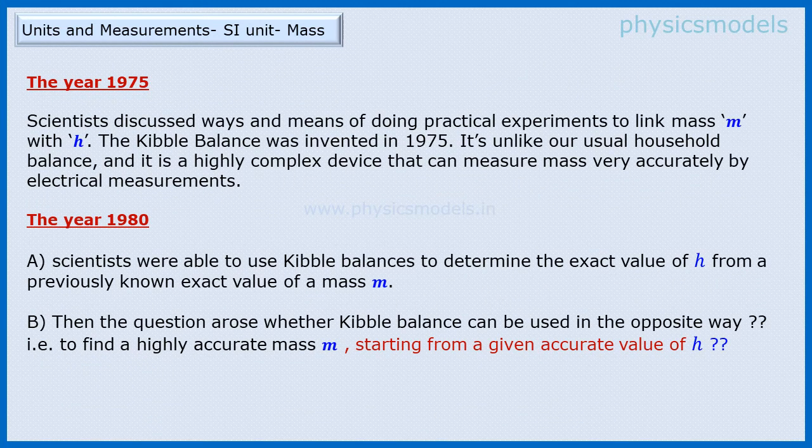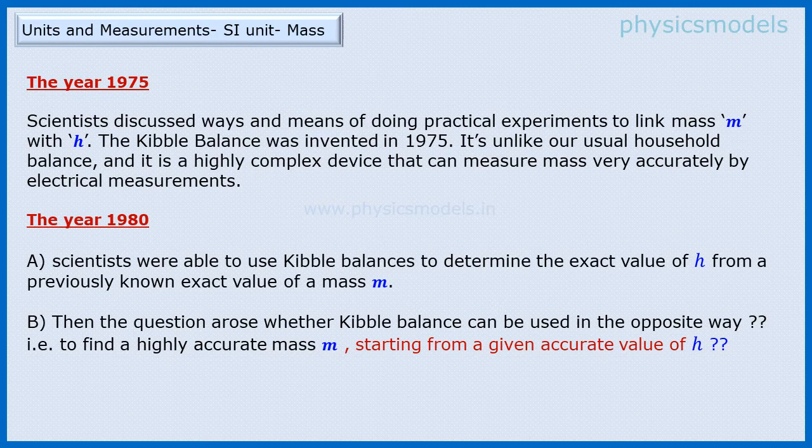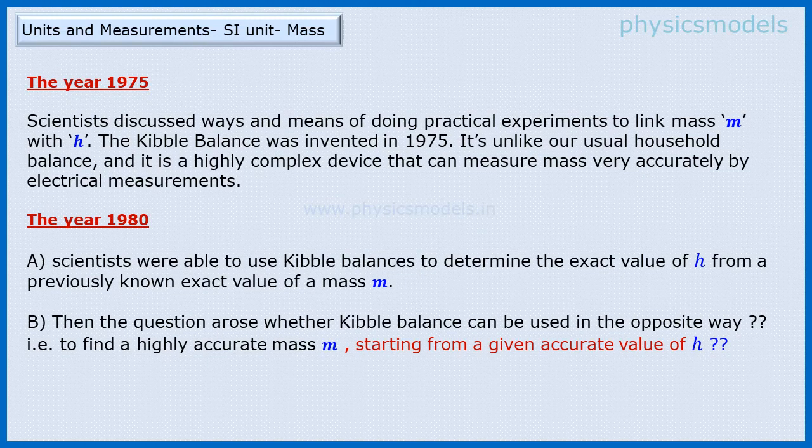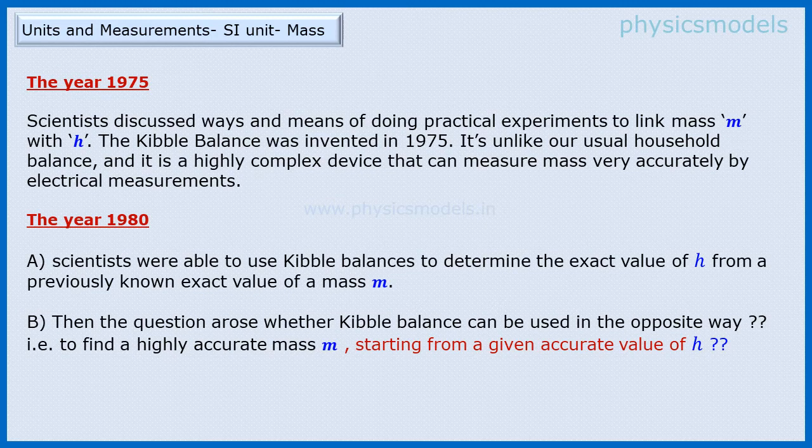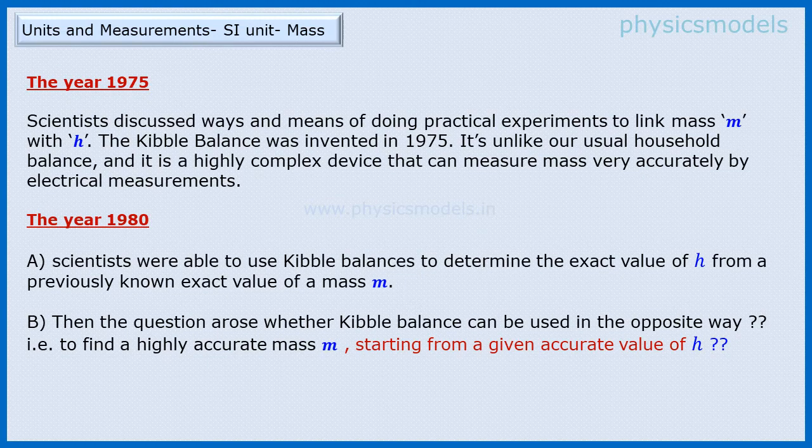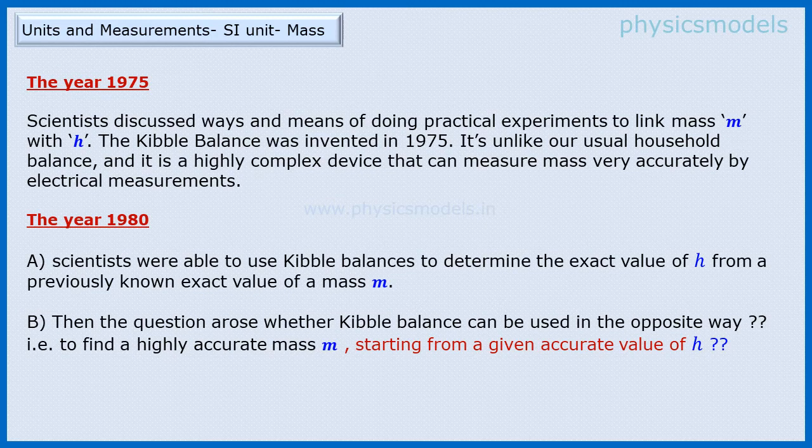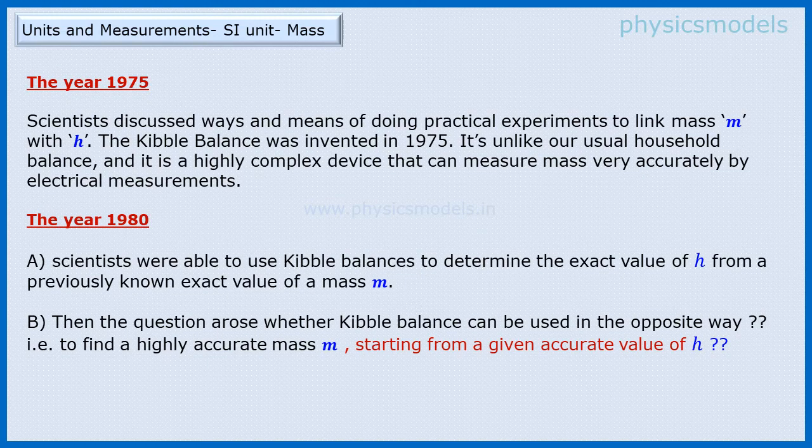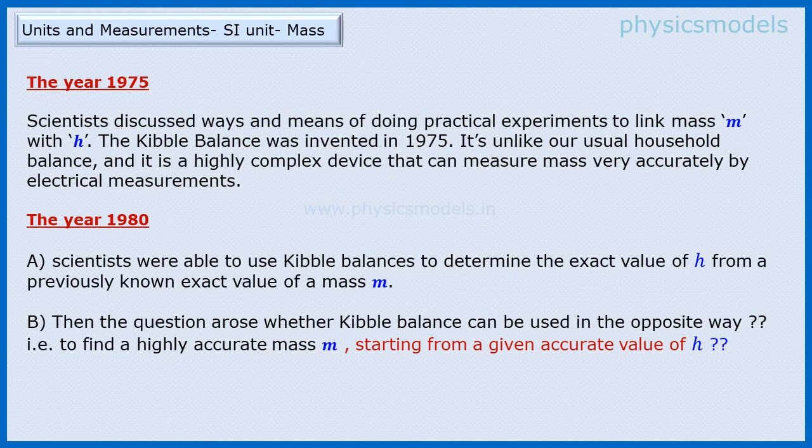The next step was that scientists wanted to do a practical experiment to check the linkage between mass and Planck's constant. This discussion took place in 1975 because the Kibble balance was invented in 1975 and not before that. In 1980, scientists were actually able to work with the Kibble balance to determine Planck's constant from a given mass. So if E = mc² = hν, for a given mass and c is anyway known, frequency could be very accurately measured in those days. The unknown was h, and scientists were able to measure it very accurately. Then the question arose: from h, can we measure mass?